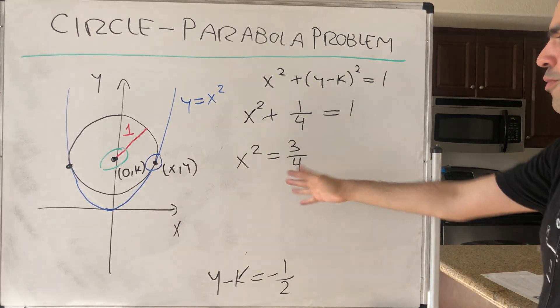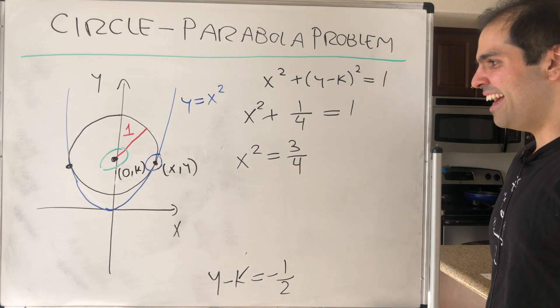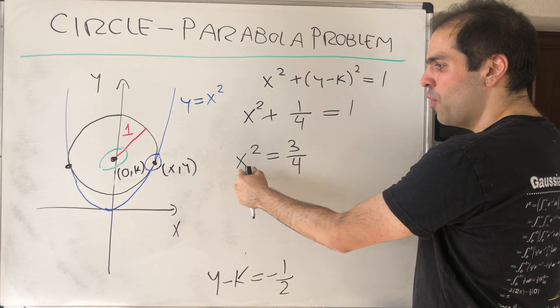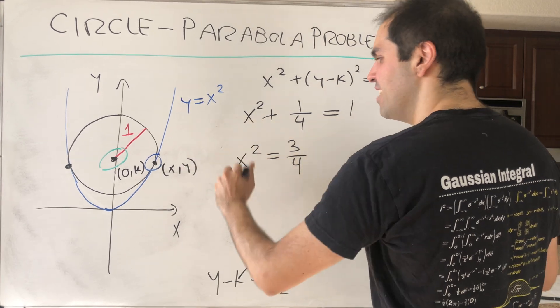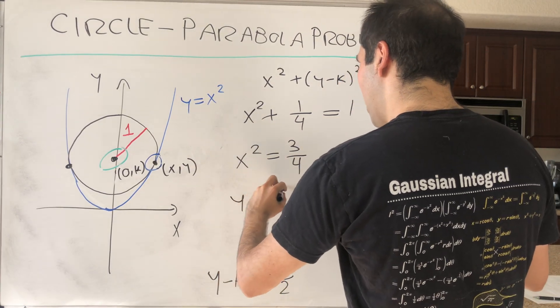But remember, we don't want to find x squared. We actually want to find k, but the cool thing is now, what is x²? Well, that's just y. So y is 3/4.